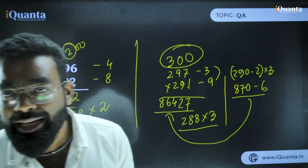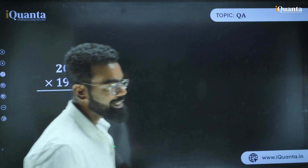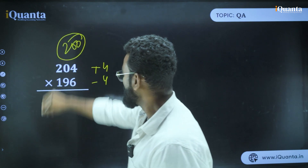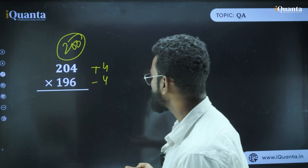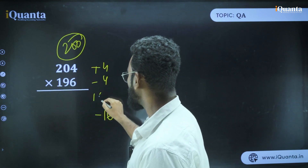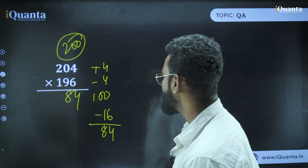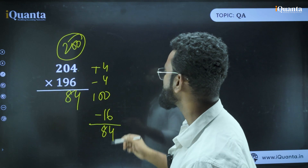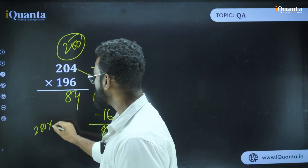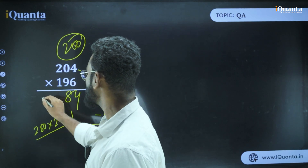The third case is when one number is more and one is less — like 204 into 196. This is plus 4 and minus 4, with base 200. So 4 times minus 4 is minus 16; subtract from 100: 100 minus 16 is 84 — write down 84. Next: 204 minus 4 is 200; 200 into 2 minus 1 is 399. The answer is 39984.